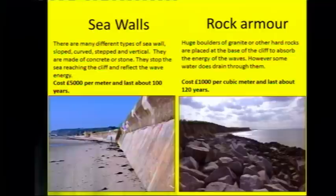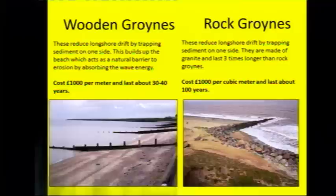So if we look at sea walls first of all, we can see that they are quite expensive at £5,000 per meter but they do last about 100 years so they will last for quite a long time. Rock armour on the other hand costs £1,000 per cubic meter and lasts for about 120 years. The problem with rock armour is that there are holes between the rocks, so it's quite possible for the water to get in between them and start to erode them slowly.